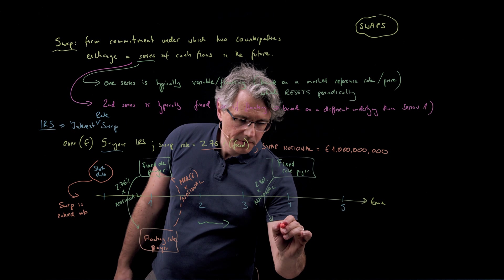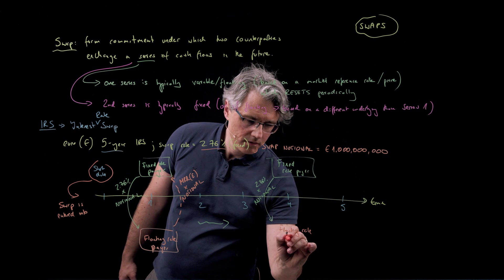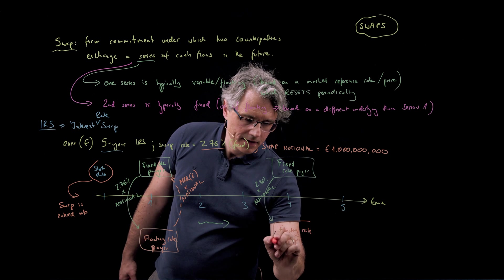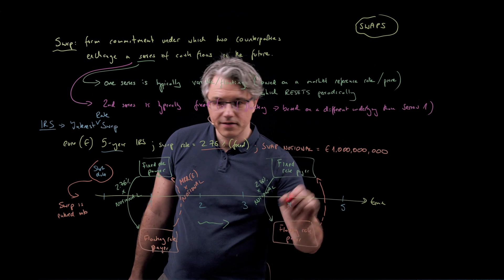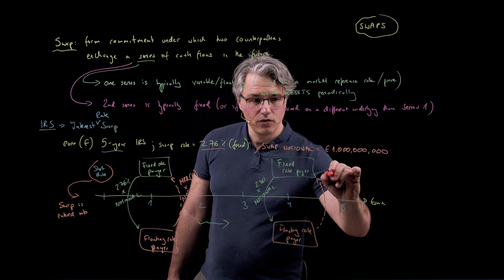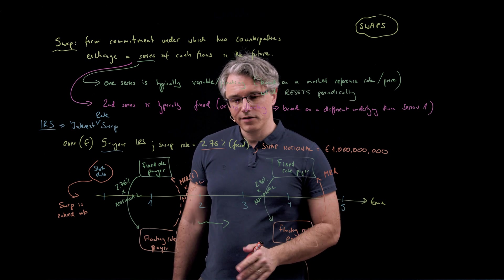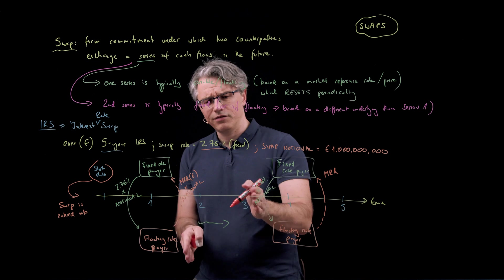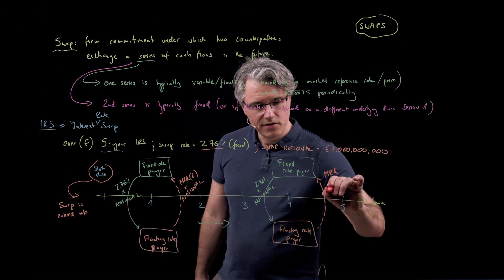And the floating rate payer is the one making a payment that is unknown in advance in the sense that it's based on the current level of the market reference rate or a level at the start of the relevant period. There are different ways to construct these things times the same notional.